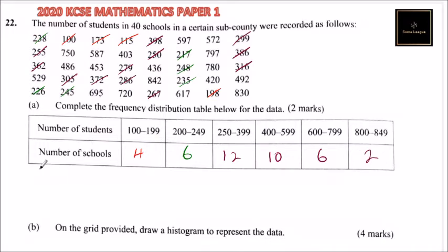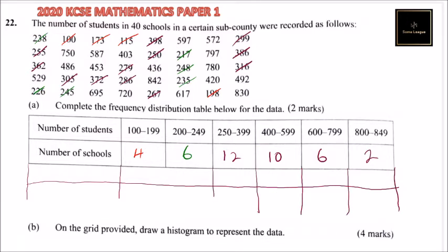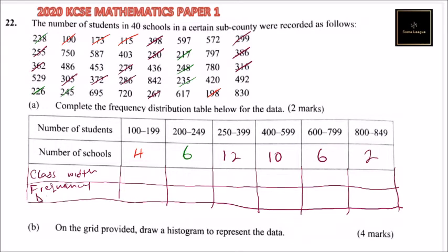To complete this frequency distribution table, we need to make two more columns. So you make two more columns, so we have that is one column, we have the other one. So you make two columns. So here you say it is class width, and here you say it is frequency density.